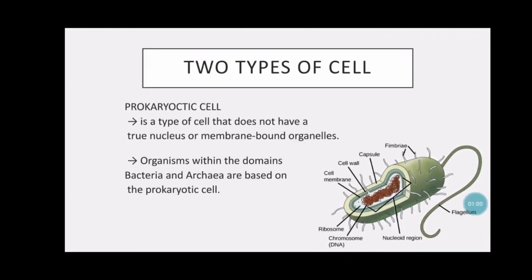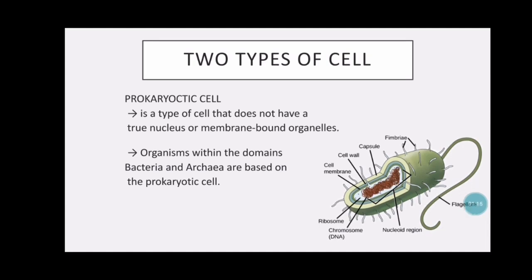The second type of cell is the prokaryotic cell. It is a type of cell that does not have a true nucleus or membrane-bound organelles. Organisms within the domains bacteria and archaea are based on the prokaryotic cell.